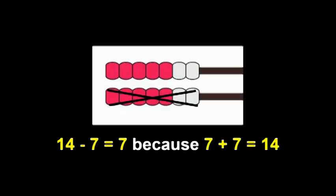How many did you see? Think for a second. Take away seven of the beads. How many will be left? How many were on the top? How many were on the bottom? Take away seven. You're right, it's seven. 14 take away seven is seven because seven and seven makes 14.